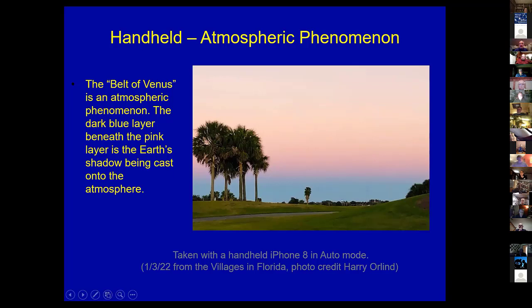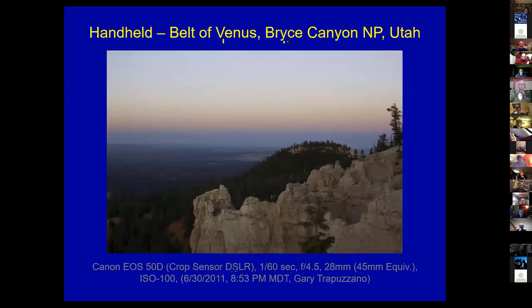The Belt of Venus occurs right after sunset when the sun is just slightly below the horizon. The dark band is the shadow of the Earth projected onto the sky, with a gradient from a bright sky at the top to a pink layer and then a grayish-blue shadow band. Harry's photo was taken handheld with an iPhone in auto mode — a very beautiful, well-composed photograph.